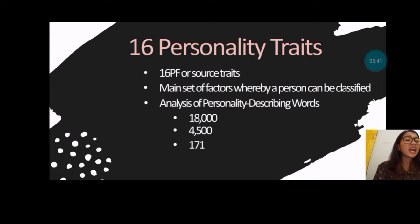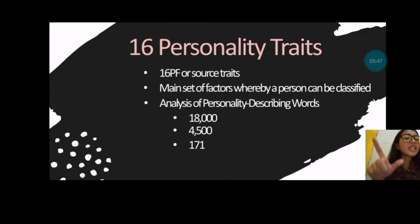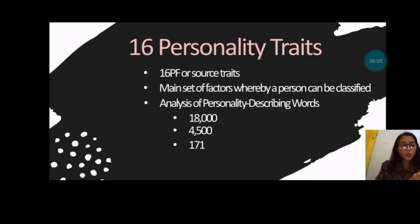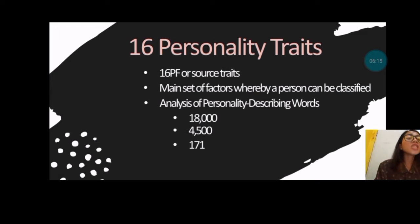That cluster I mentioned is the pattern where the same traits emerge. He also yielded 35 primary factors — 23 for the normal population and 12 for the pathological population. When we say pathological population, these are the abnormal population. However, he didn't develop the pathological population much, since he focused more on the 23 of the normal population.